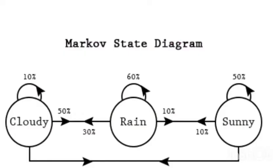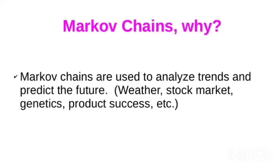Here you can see the Markov state diagram. Markov Chains are used to analyze trends and predict the future, such as weather, stock market, genetics, product success, etc.